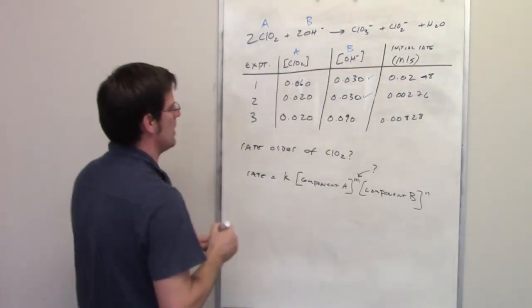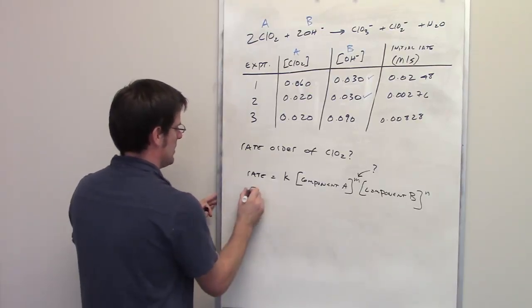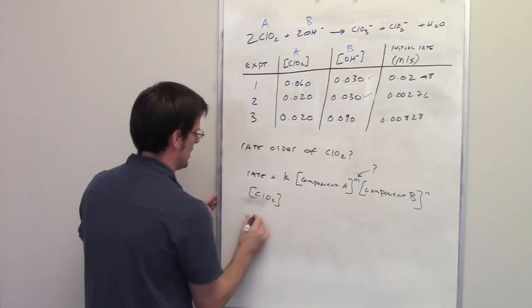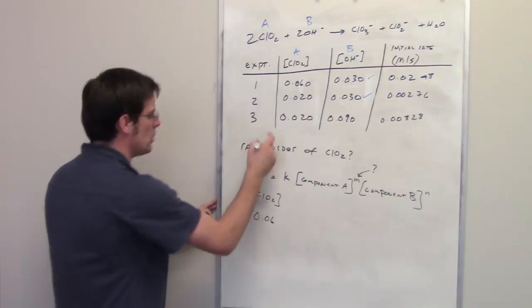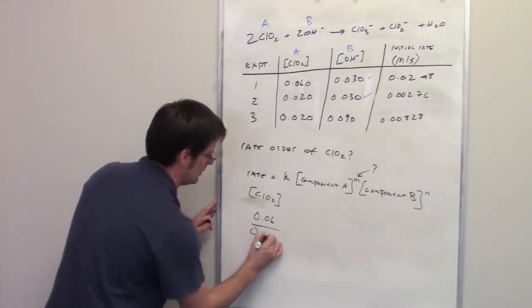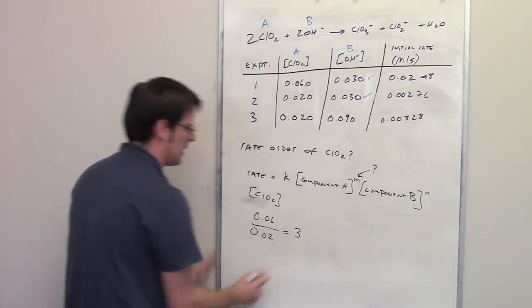So let's zoom in on this. In experiment 1, the concentration of my chlorine dioxide in experiment 1 was 0.06. In experiment 2, it was 0.02. I divide one by the other, the big one by the small one, and you'll notice I get 3.